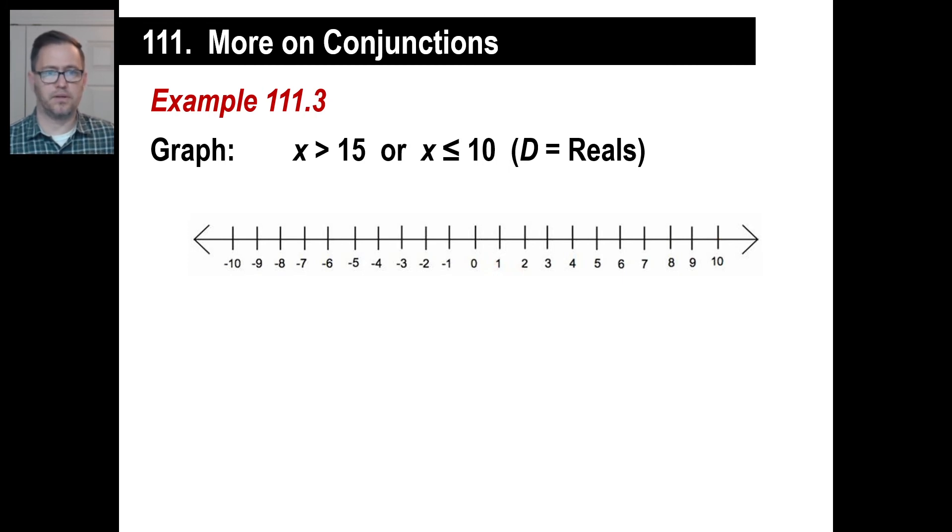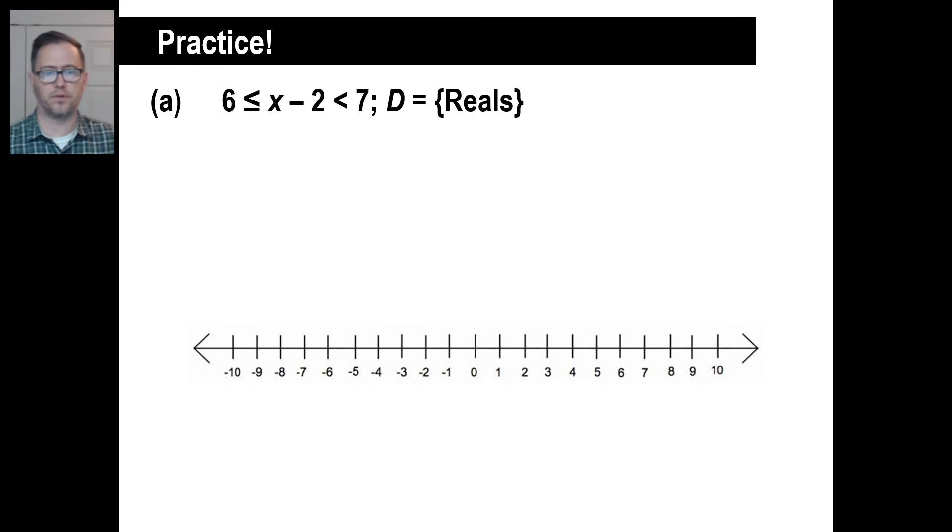All right. The second one, let's look at this. x is greater than 15. That's real numbers. So greater than 15, we'll just pretend that 15 is right there. You know, greater than, so an open circle and everything like that. Or x is less than or equal to 10. Well, here's our 10. It includes 10. So a closed circle all the way there. There you go. Piece of cake for disjunctions.